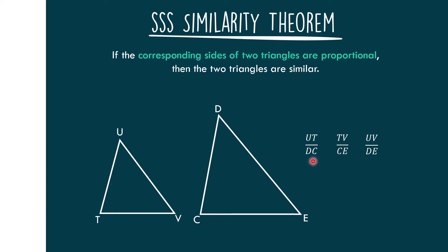Remember that these ratios are two proportional; therefore, each ratio should be equal. If this is the case, then we can conclude that triangle TUB is similar to triangle CDE.